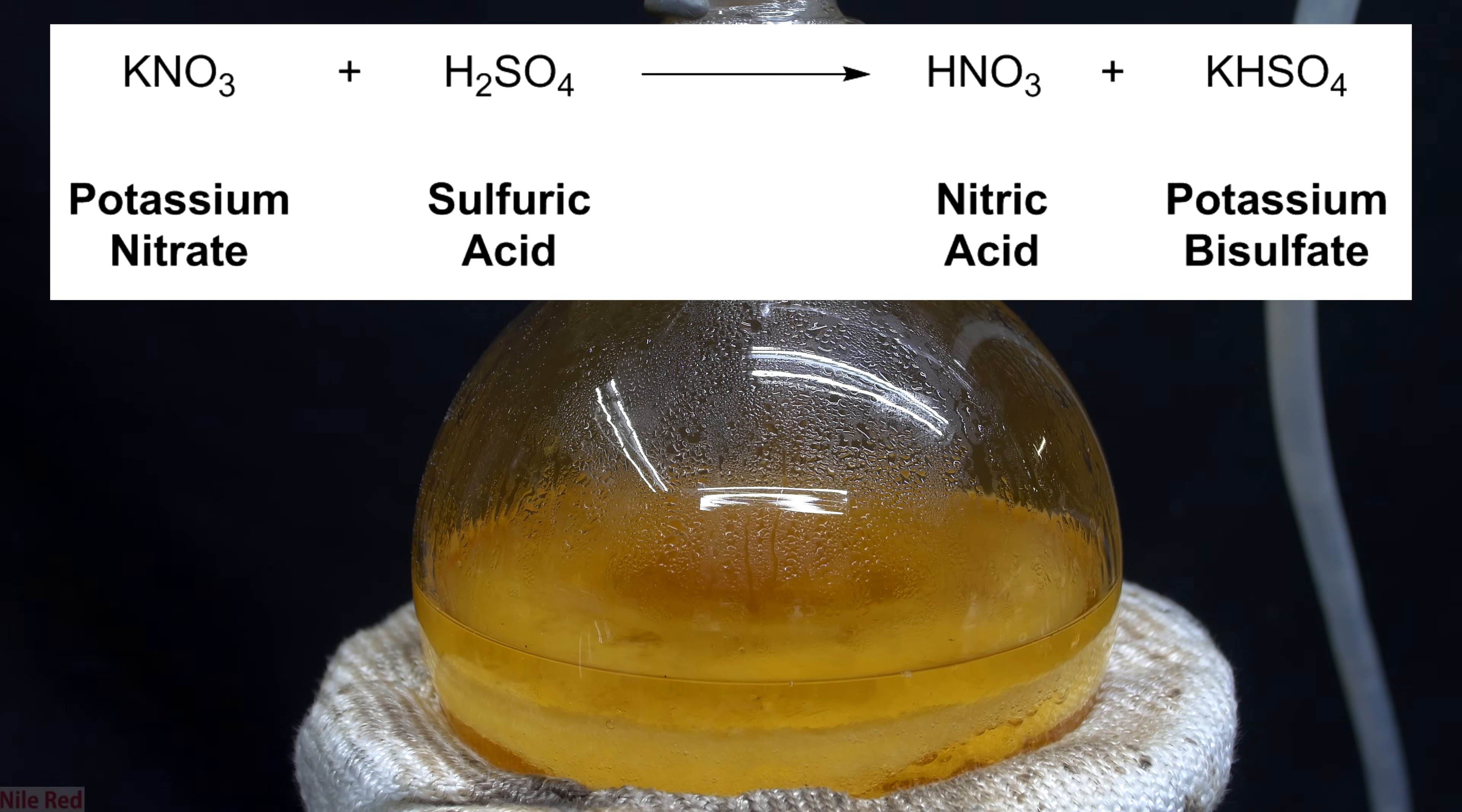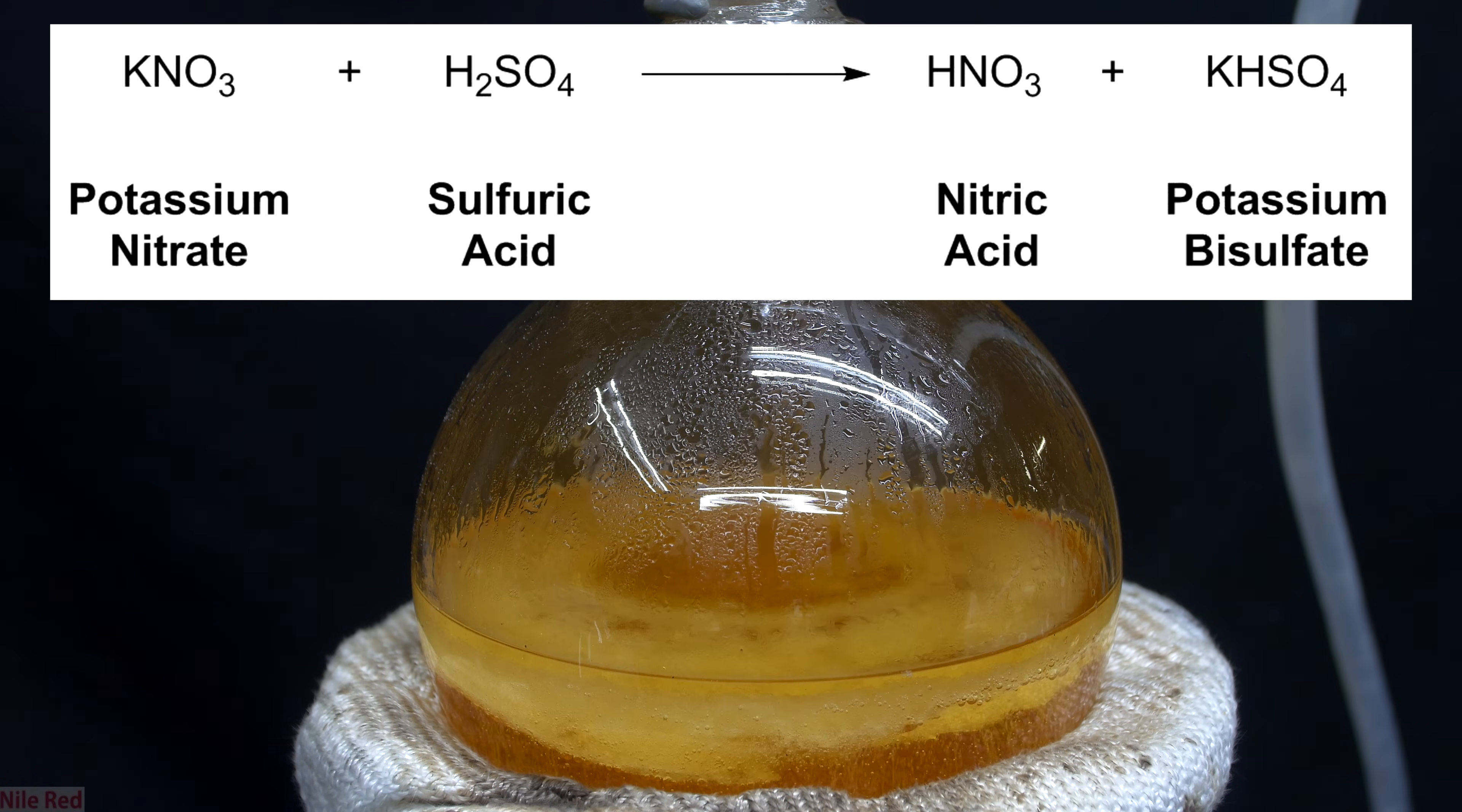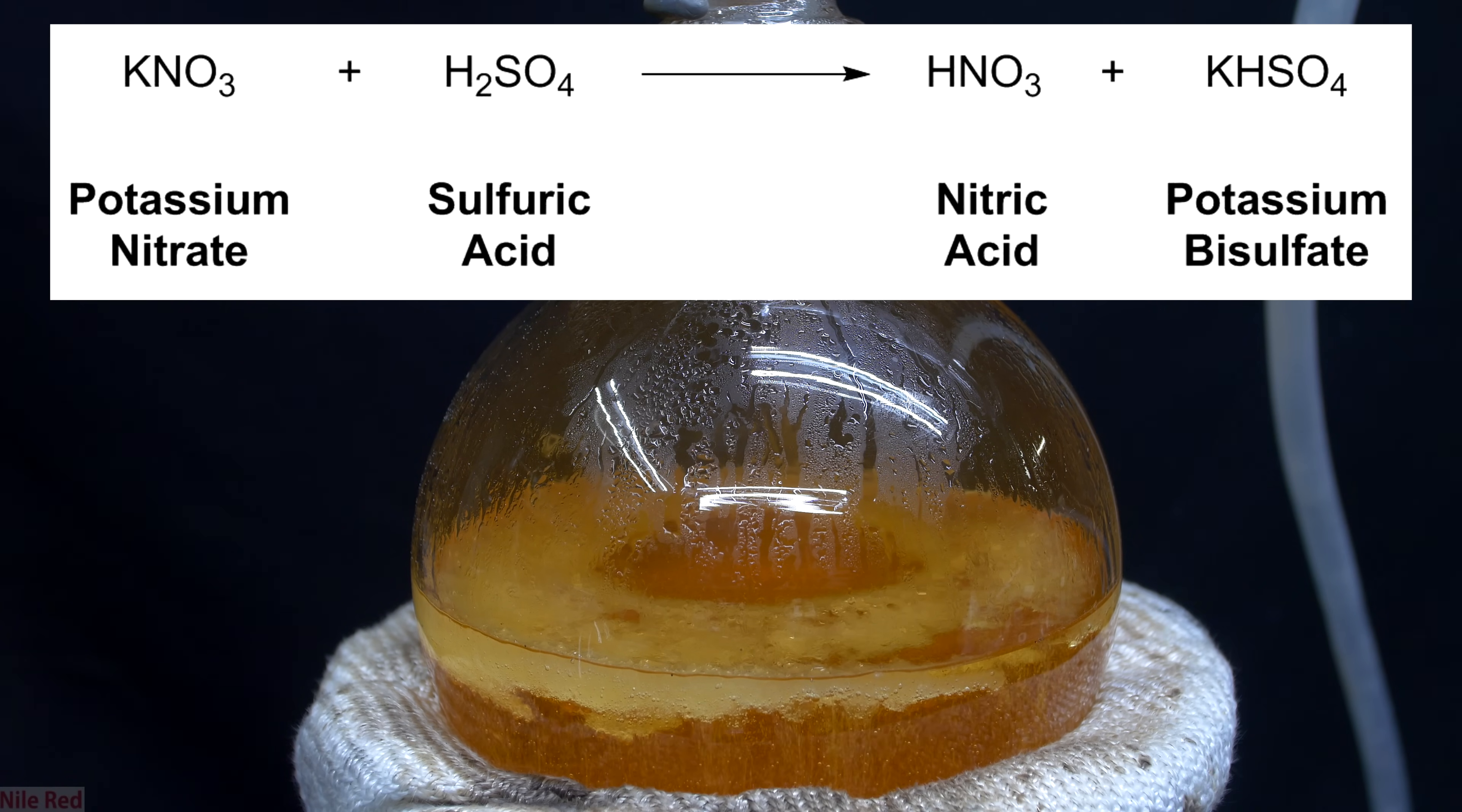The reaction that's taking place here is pretty simple. We're just reacting sulfuric acid with potassium nitrate to produce potassium bisulfate and nitric acid. The potassium bisulfate is a salt and will stay in the flask, whereas the nitric acid will be distilled off with some water.